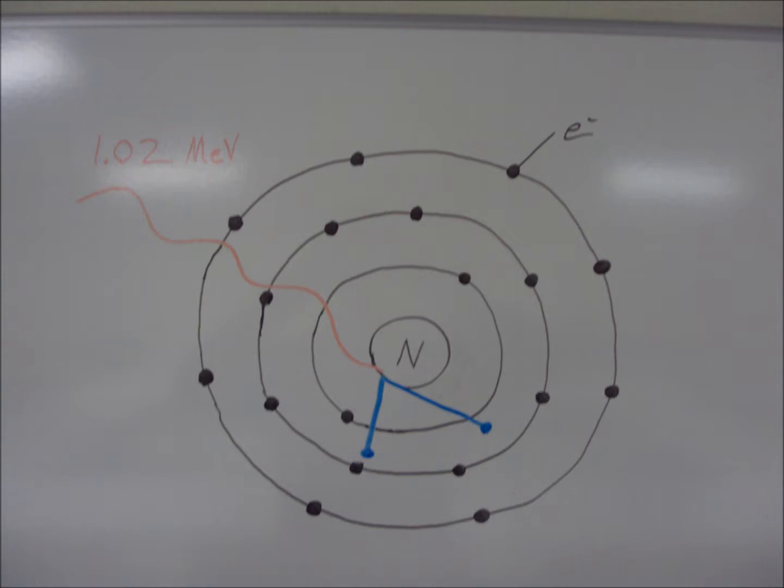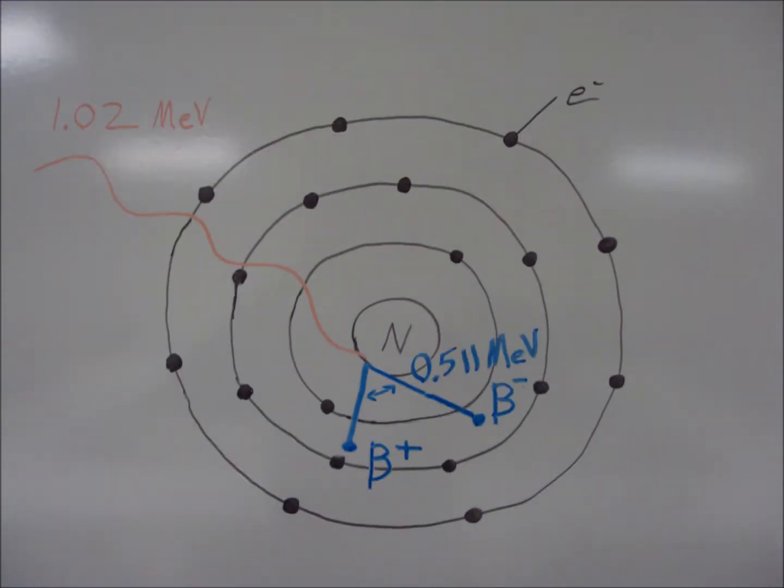The beta positive, also known as a positron, and the beta negative, which is also known as a negatron. Both of these are roughly the equivalents of a standard electron.